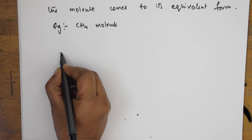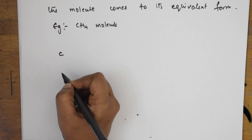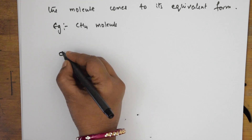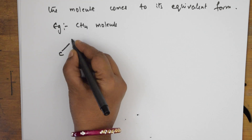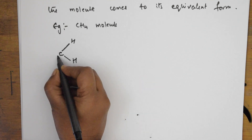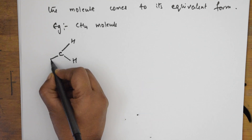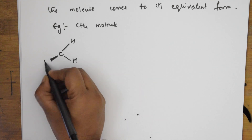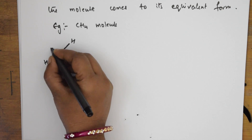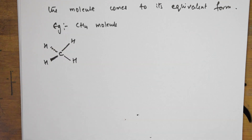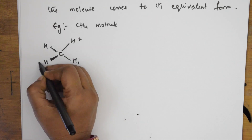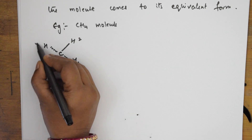Methane, formula CH4, has one carbon. When I represent the structure, there is one hydrogen here, one more hydrogen here, the third hydrogen here, and one more hydrogen here. Let us remember these as hydrogen one, two, three, and four.